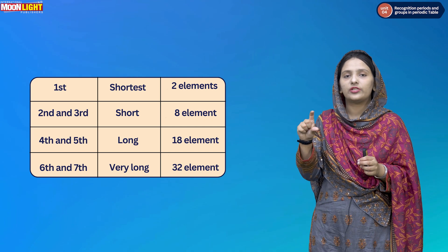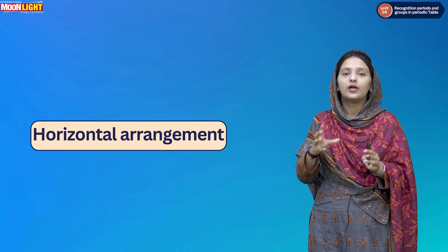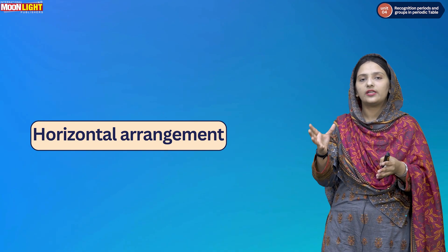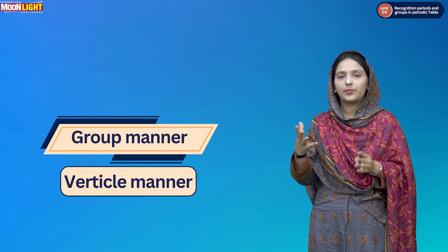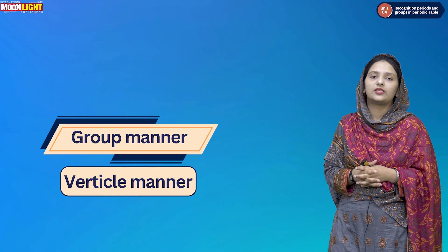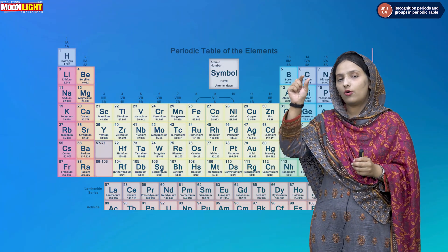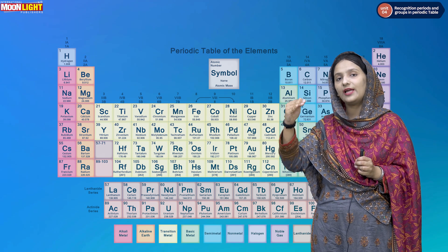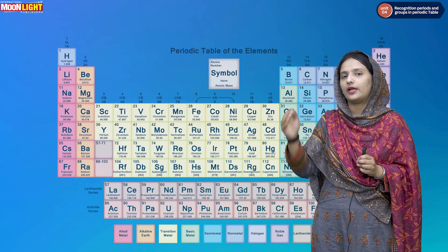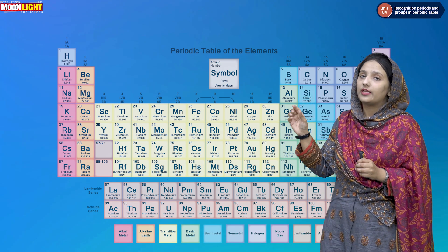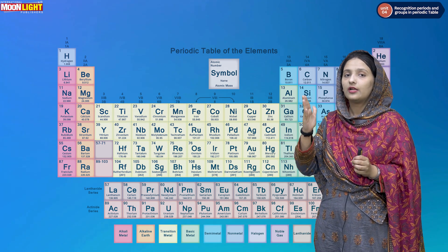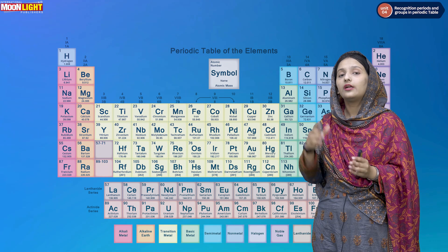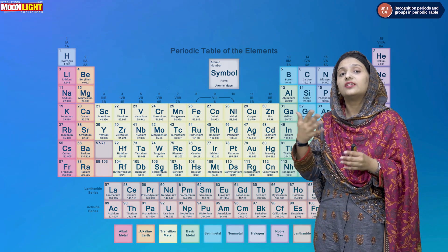The definition of a period is a horizontal representation of elements in the periodic table. Next, we look at the group arrangement. In the periodic table, groups are vertical columns where elements have the same valence shell electron count, increasing by one. There are 18 groups in the periodic table, each with different names based on their chemical properties.